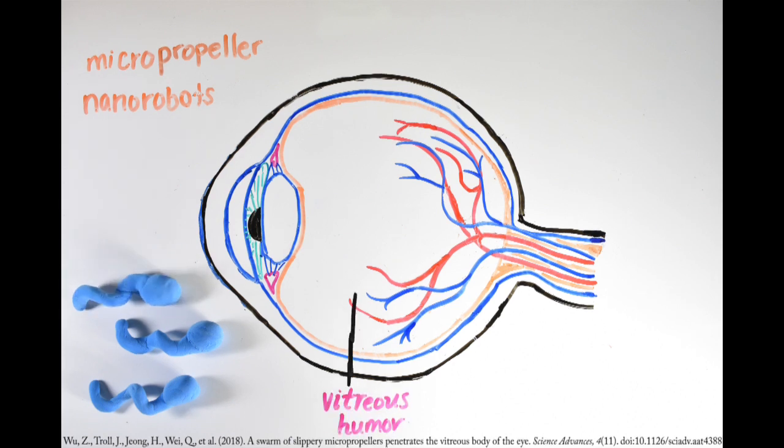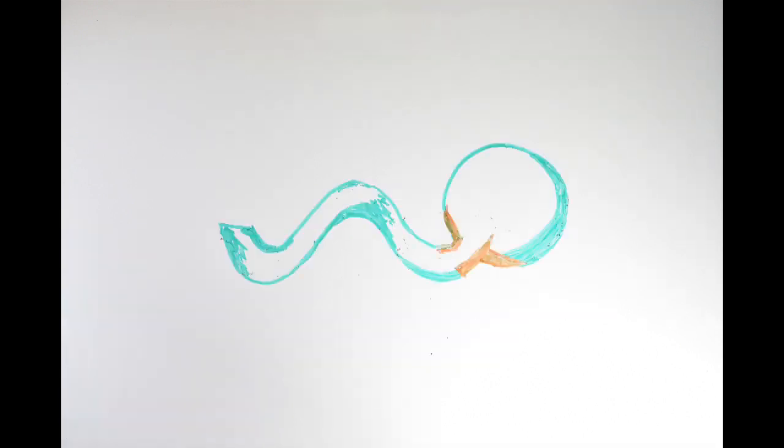These nanorobots move through the vitreous humor to the retina and have a precise shape, size, and composition. Each micropropeller has a silica head, a segment of magnetic nickel or iron, and a silica helix.